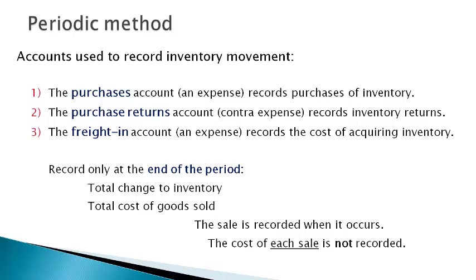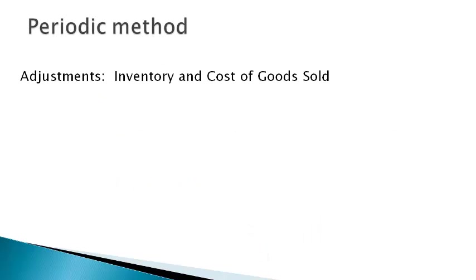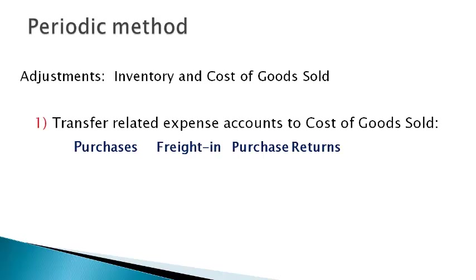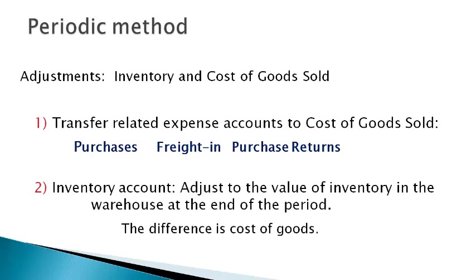At the end of the period, the inventory account reflects the same amount as the beginning of the period. Inventory actually changed with purchases, returns, and sales, and the inventory account must be adjusted to the correct value at the end of the month. The inventory account is adjusted and cost of goods sold is recorded for the cost of all goods no longer held at the end of the period. Amounts recorded to the purchases, freight in, and purchase returns accounts are transferred to the cost of goods sold account. The difference in the beginning and ending inventory account is transferred to cost of goods sold, and items no longer there are considered to be sold.